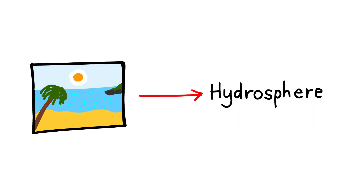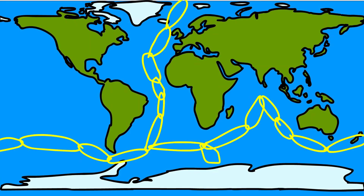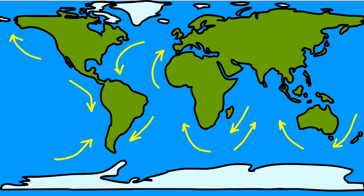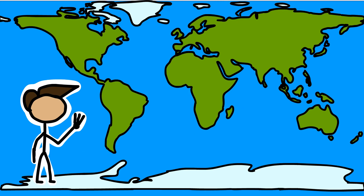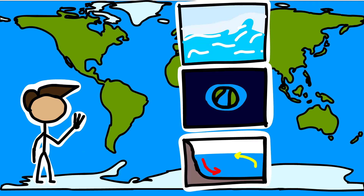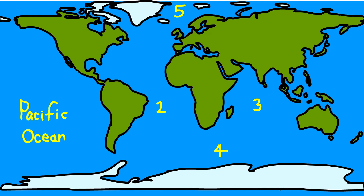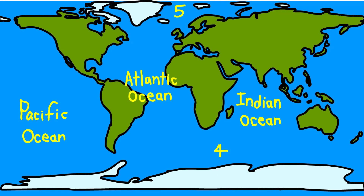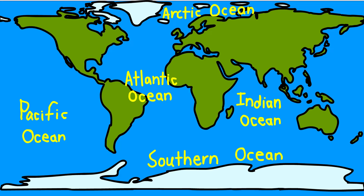Oceans are the major part of the hydrosphere. They are all interconnected, and the ocean waters are always moving. The three chief movements of ocean waters are the waves, the tides, and the ocean currents. The five major oceans are the Pacific Ocean, the Atlantic Ocean, the Indian Ocean, the Southern Ocean, and the Arctic Ocean, in order of their size.